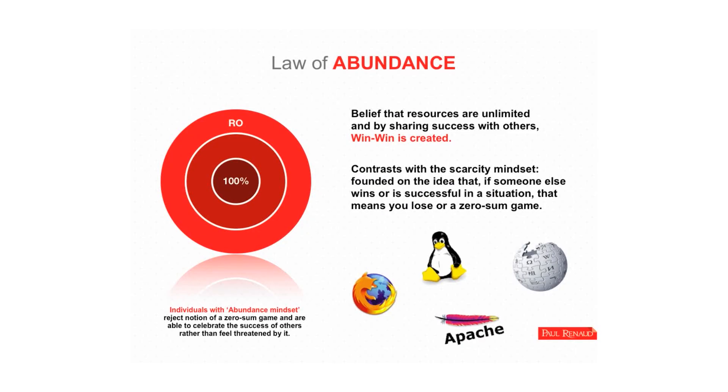So someone said, you know what, let's give it for free and then invite like-minded people to start contributing to it. And you know what? God knows what will happen. So open source is an example of altruism, giving back with a law of abundance mindset.